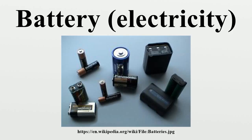Primary batteries, or primary cells, can produce current immediately on assembly. These are most commonly used in portable devices that have low current drain, used only intermittently,